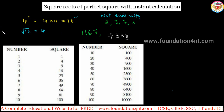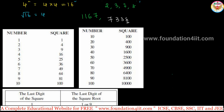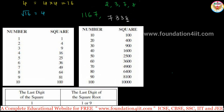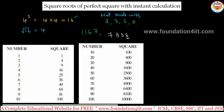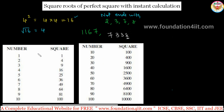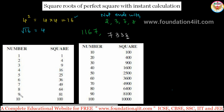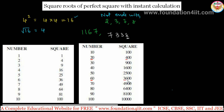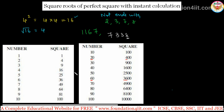Perfect squares end with other digits — specifically 1, 4, 9, 6, 5, and 0. To do this instant calculation, you must memorize the squares table: 1²=1, 2²=4, 3²=9, 4²=16, and 10²=100. Also note: 60²=3600, since the two zeros attach. Memorize these values before starting.